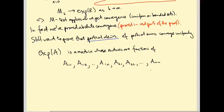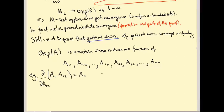When I say partial derivative, I mean the partial derivative of a matrix entry of exp(A) with respect to a matrix entry of A. For example, if I differentiate A_11 · A_12 with respect to A_12, I treat them as independent variables and get A_11. Similarly, differentiating A_22 with respect to A_11 gives 0, since they are completely independent.